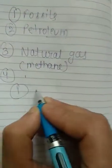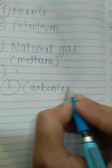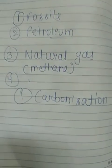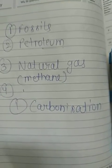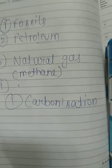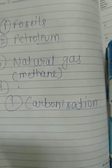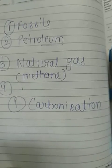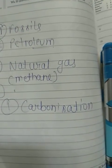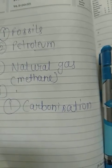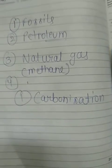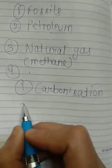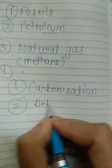An important term from this chapter is carbonization. Carbonization is the process of conversion of wood into coal in the absence of air. When plants die, they get buried inside the earth, and as they go deeper, bacteria start acting on them in the absence of air. The wood is thus converted into coal by bacteria, and this process is known as carbonization.